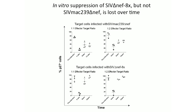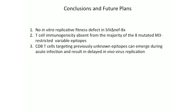In conclusion, we have shown that we were able to engineer a derivative of SIV-MAC239-Delta-NF with mutations in immunodominant variable epitopes, and that this virus had no in vitro replicative fitness costs compared to unmutated wild-type Delta-NF. Furthermore, we have shown that T cell immunogenicity is absent for the majority of the eight M3-restricted mutated variable epitopes included in the 8X virus. Finally, we have observed that CD8 T cell responses targeting previously unknown epitopes can emerge during acute infection and result in delayed in vivo control of virus replication.